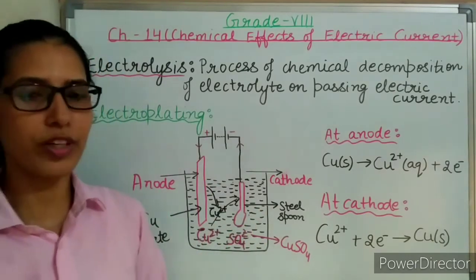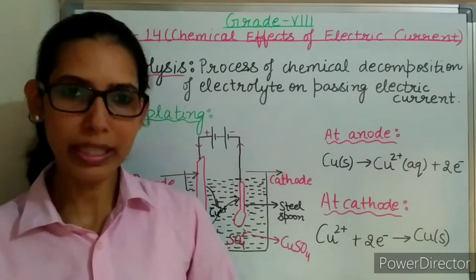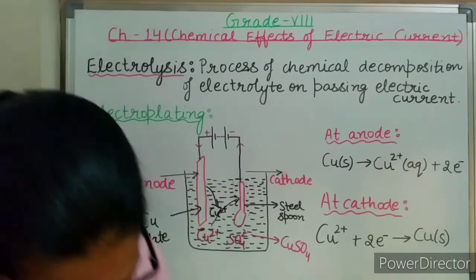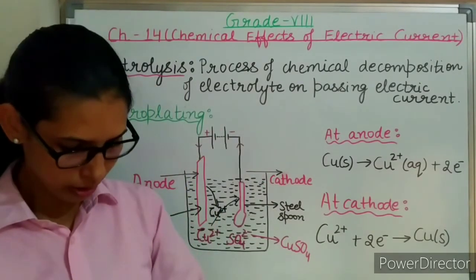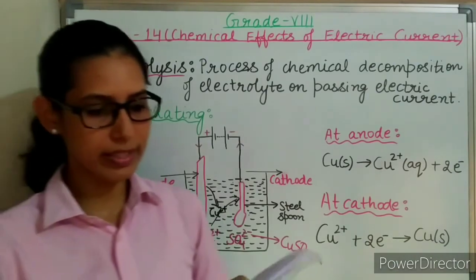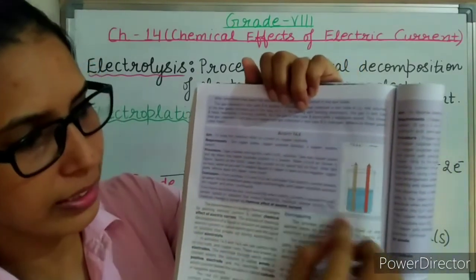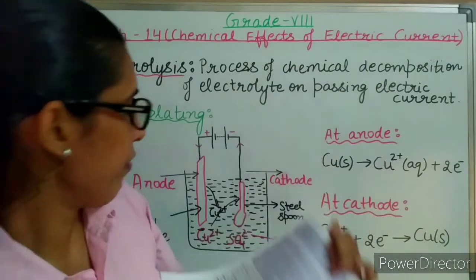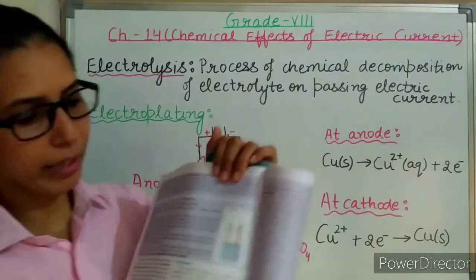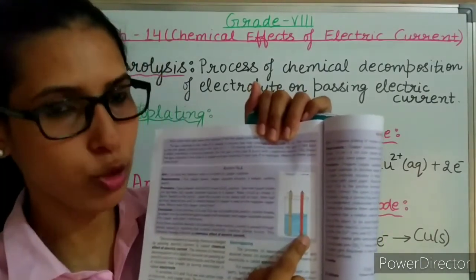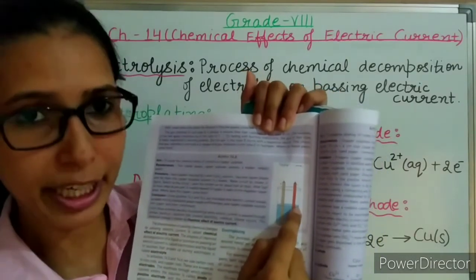This electroplating process is very useful — it is used for decoration and corrosion prevention. There is one more activity given in the book, on page number B60, activity 14.6, to study the chemical effects of current on copper sulfate. This is similar to the activity just explained. The difference is that here both the plates are of copper, so copper from the positive plate will start getting deposited on the negative plate.